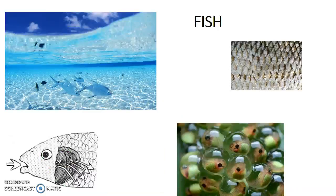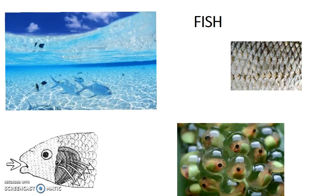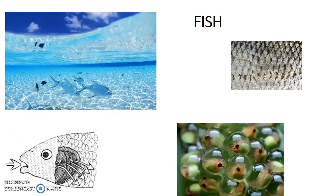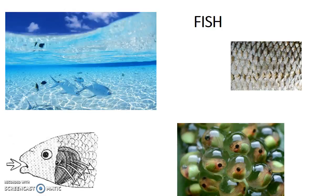And in the last group, the fish. Fish live under the water and breathe with their gills, that's why they can survive there. Fish have fins and tails to swim. There are many different types of fish, but all of them share common characteristics: they are all oviparous, and their bodies are covered by scales.